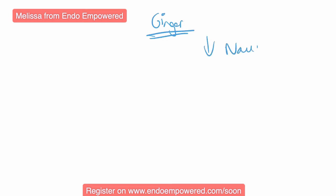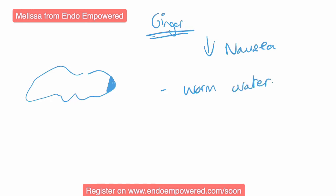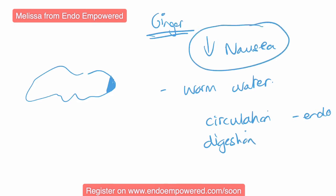Another one you could try is ginger. Ginger is very good for lowering that feeling of nausea. You can just get a knob of ginger, cut off a sliver, put it in some warm water, and drink it throughout the day. Ginger is also very good for your circulation, which will help with endo as well — it has a dual effect. It is also really good for your digestion. It has many benefits, but it's known to support with nausea and really lowering that experience of nausea.